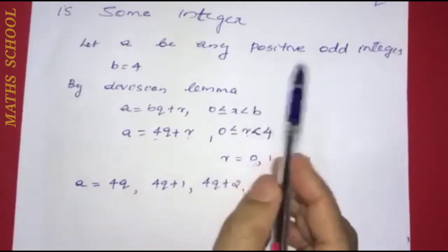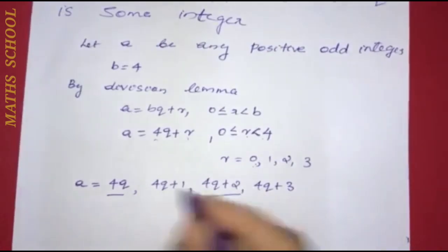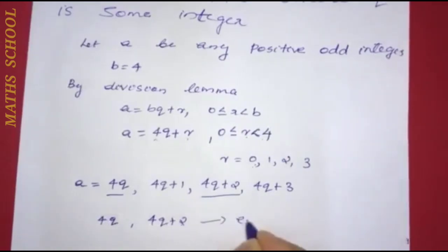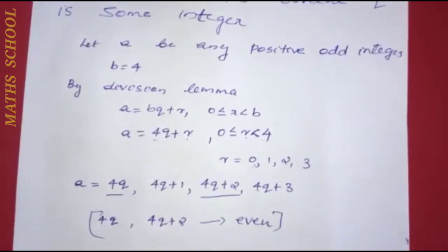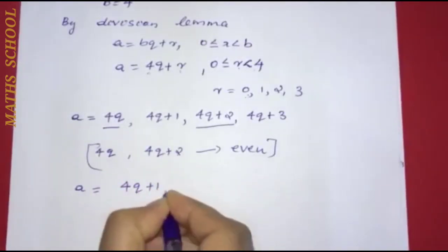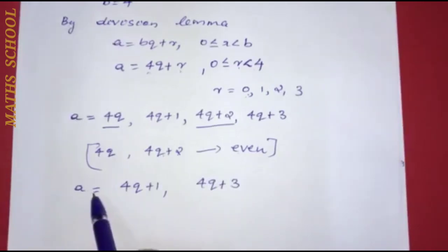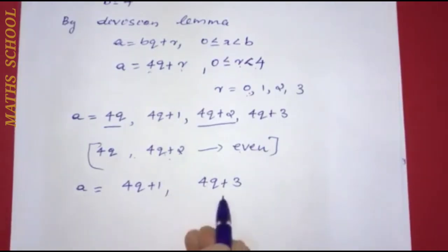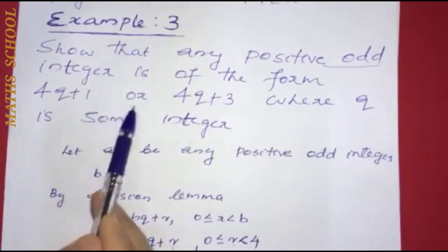Since we need a positive odd integer, we cancel the even forms 4q and 4q plus 2, because these two have 2 as a common factor and are even numbers. The remaining odd forms are 4q plus 1 and 4q plus 3. Therefore, any positive odd integer is of the form 4q plus 1 or 4q plus 3.